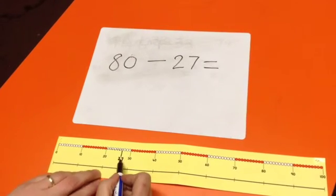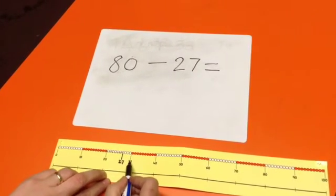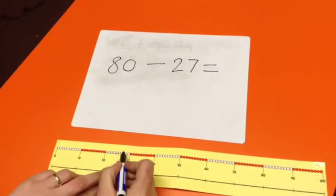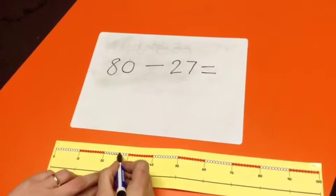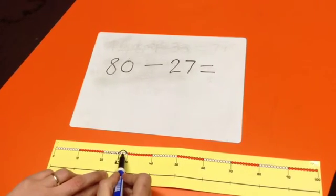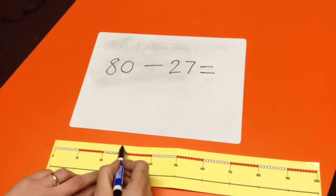We then count up to our nearest ten to work out the difference between 27 and 30. So, we do this by jumping. We jump from 27 to 30, which gives us a difference of one, two, three beads.